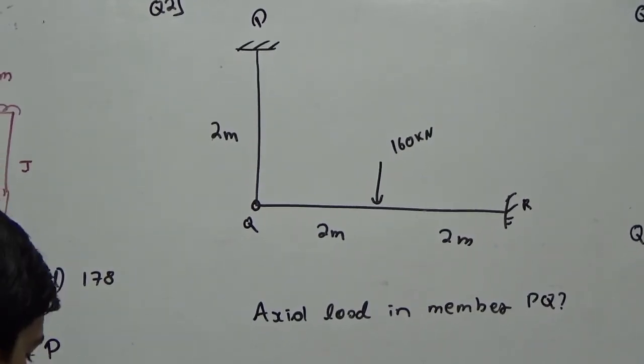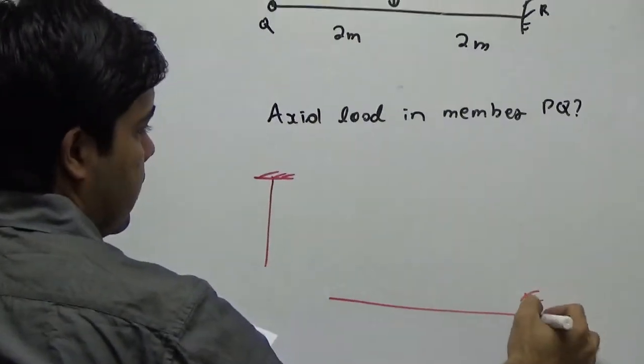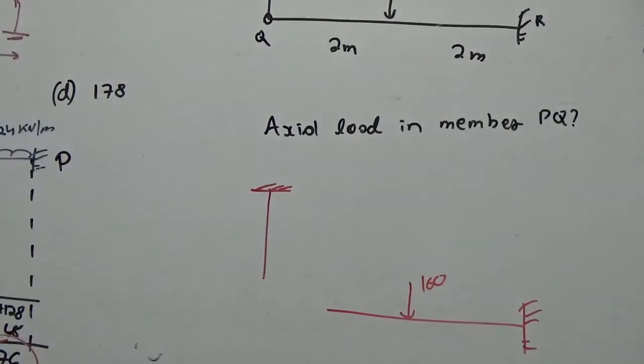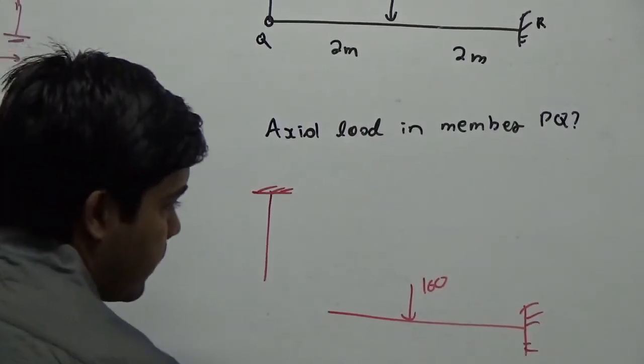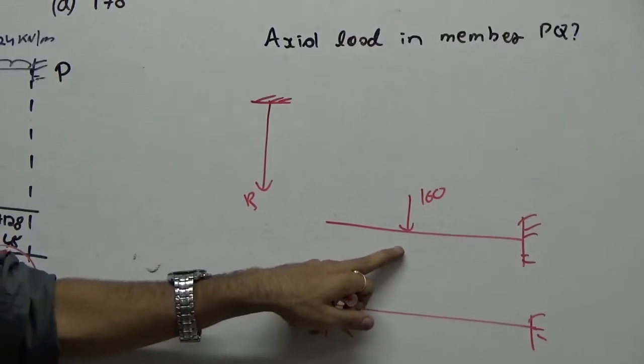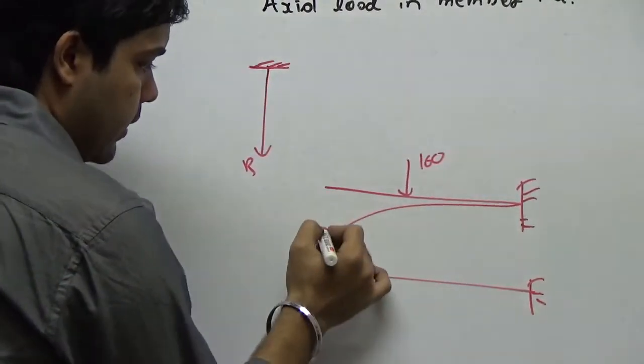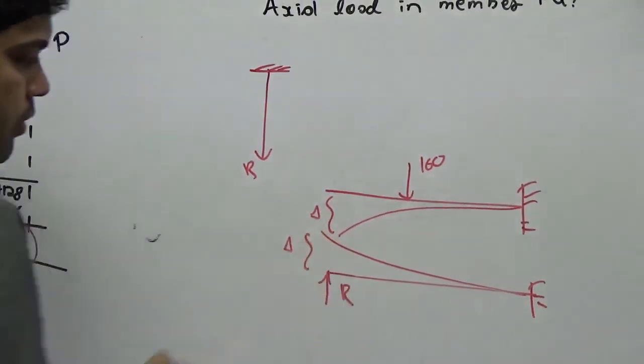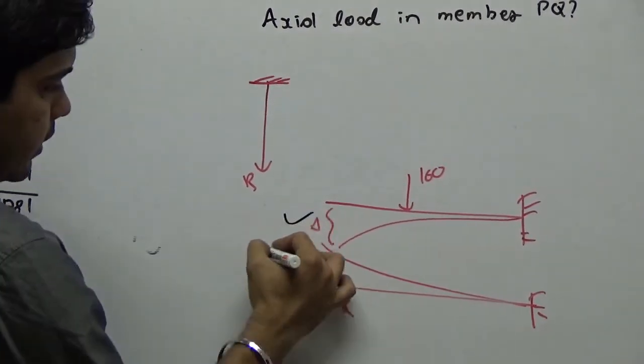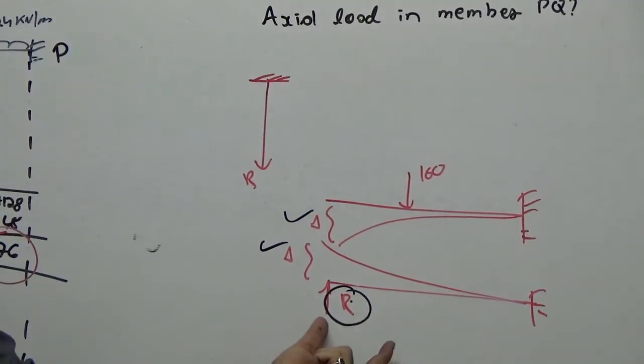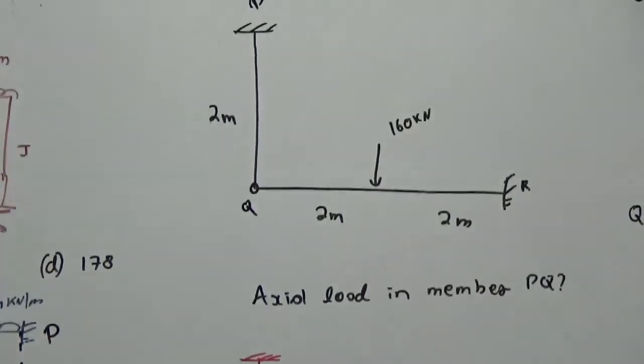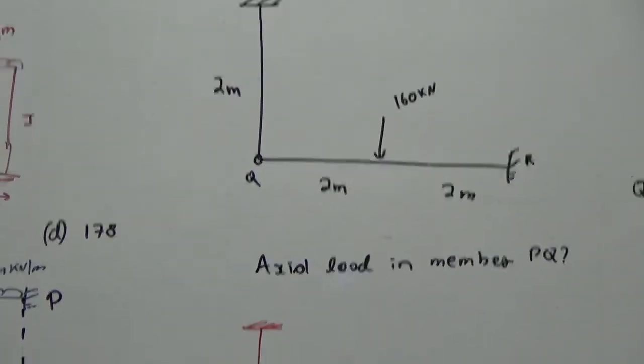If you consider the axial load in the member PQ, you have a fixed end here and I consider the free body of it. If this is my 160 here, and here this is R - here I have R value and here I have 160. If this deflects like this and this deflects like this, this deflection should be zero. So if I equate these two, will I get the relation between R, the equation which has R in it. That R itself is the axial load for PQ and that's what is asked. So my aim is now to find R.